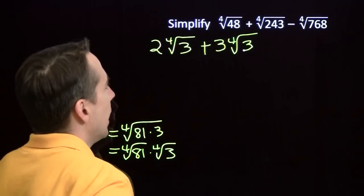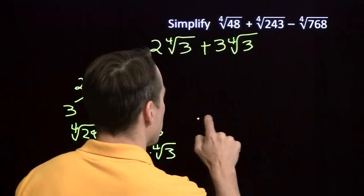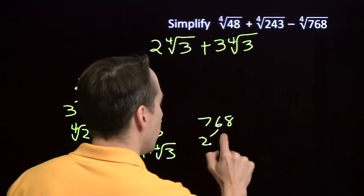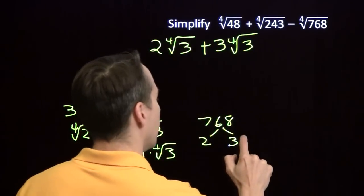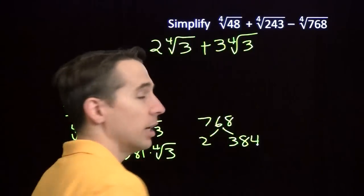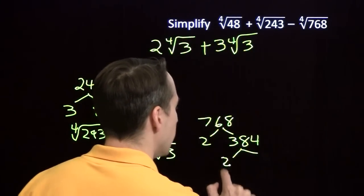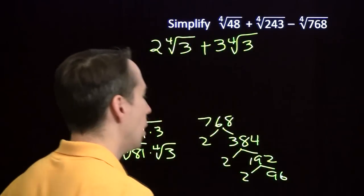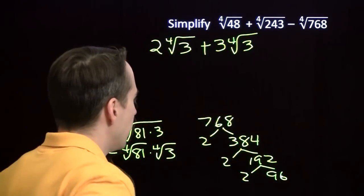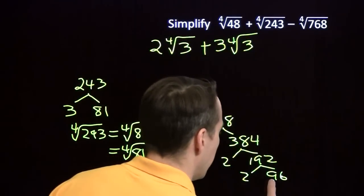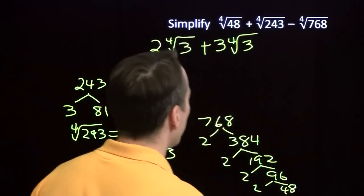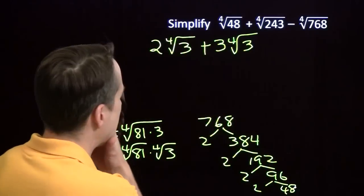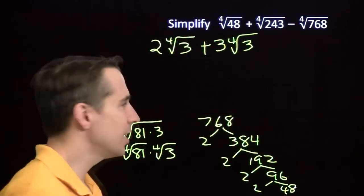Okay, now 768. That's going to take some work too. Let's see. We'll start off 768. What are we going to pull out here? I'll pull out a 2. Pull out a 2, and that'll go into there. 384. 384. Pull out another factor of 2. And then I have 192. Pull out another factor of 2. We get 96. We've already dealt with 48. Ah, check this out.